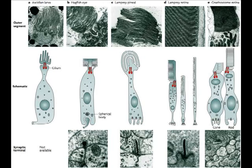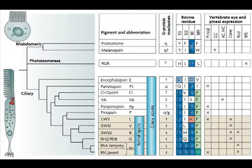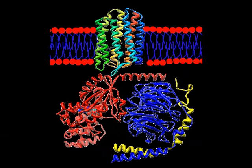Let's take a closer look at the photoreceptor cells. Why are they special? They contain chemicals called opsins. Ciliary photoreceptors contain a broad diversity of these, of which the best known is rhodopsin, derived from vitamin A.